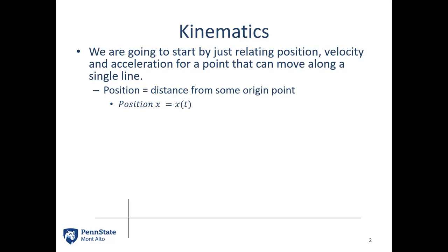We're going to start with position. In a single dimension, the position can be given by a single variable x. I'm going to have some origin point that's going to be fixed as my observation point, and some particle p that's going to be moving left and right along this line. To understand the position I just need a single variable x, that is the distance from the origin point to the moving point p.